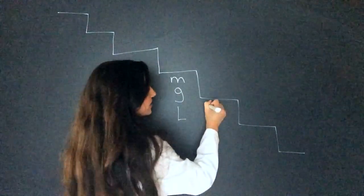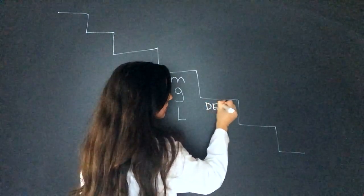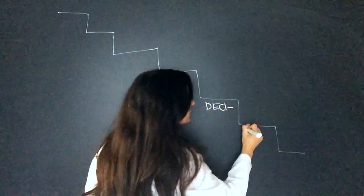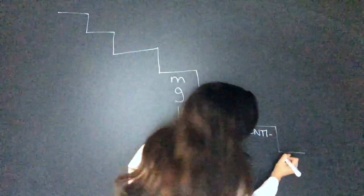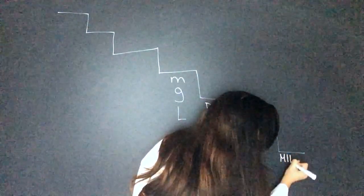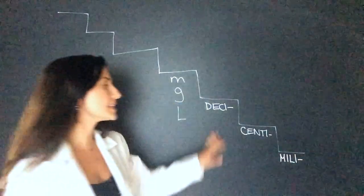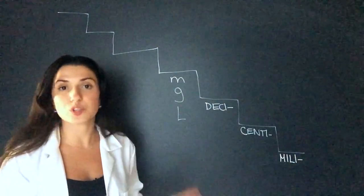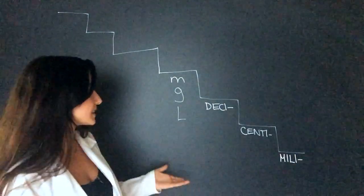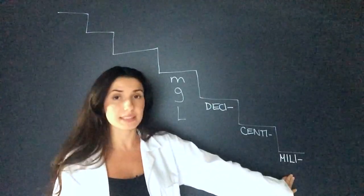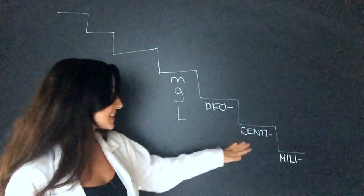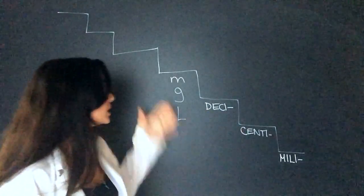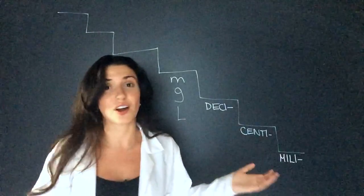Now going down, we have deci, centi, and milli. This is like the prefix that goes on the unit. So for example, if I was doing liters, this would be milliliters, centiliters, and deciliters. We don't really see centi and deci for liters, but we do for meters. Centimeters are on your ruler.